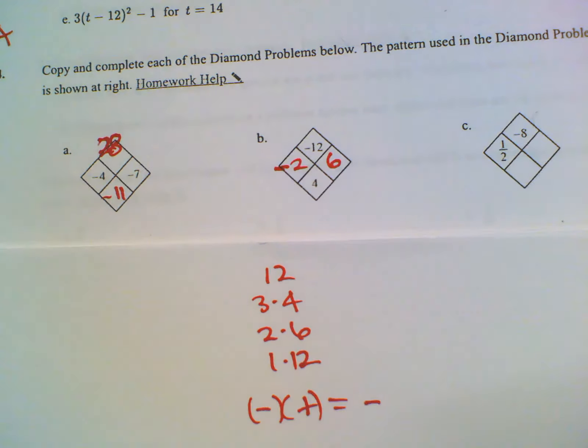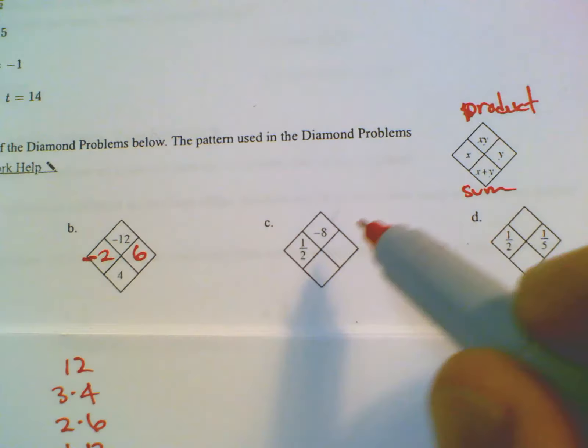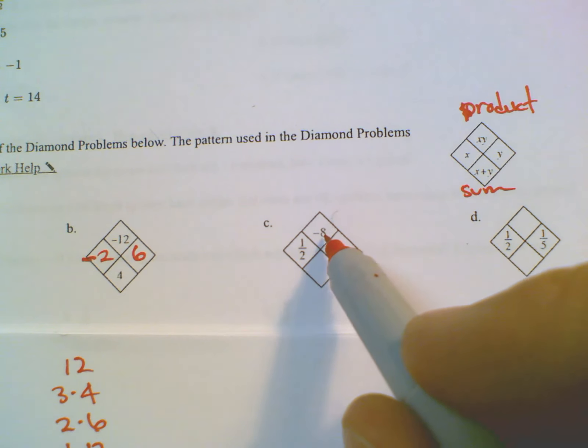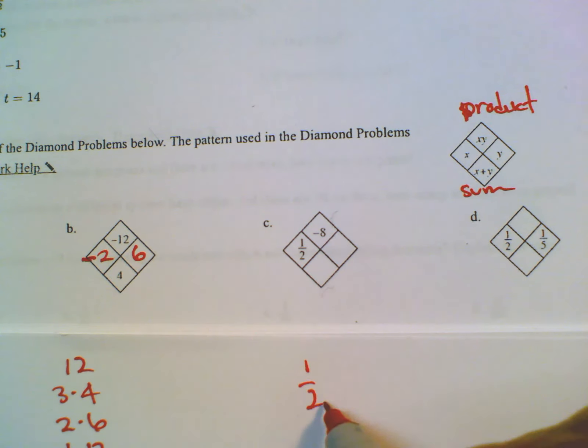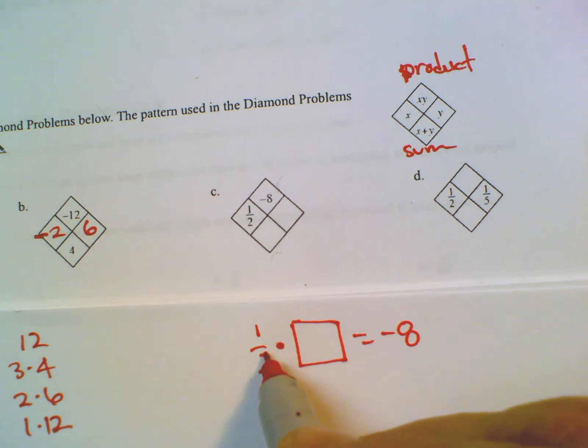Okay, let's go to C. Now I'm given one number and the product. So at this point I'm saying one half times something is equal to negative eight. One half of something is negative eight. Well, first of all, if my one half is positive, that number has to be negative because positive times a negative makes a negative. The next thing is, well, what do I take a half of in order to get eight? That would be 16. Half of 16 is eight. So that's going to be a negative 16.